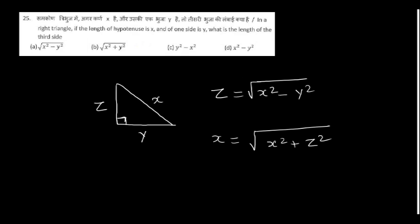In a right-angle triangle, if the length of hypotenuse is x and one side is y, what is the length of the third side? All of you know it is Pythagoras theorem. Here you can write x squared equals y squared plus the other side squared. Using this we can find the length of each side. The third side is square root of x squared minus y squared.